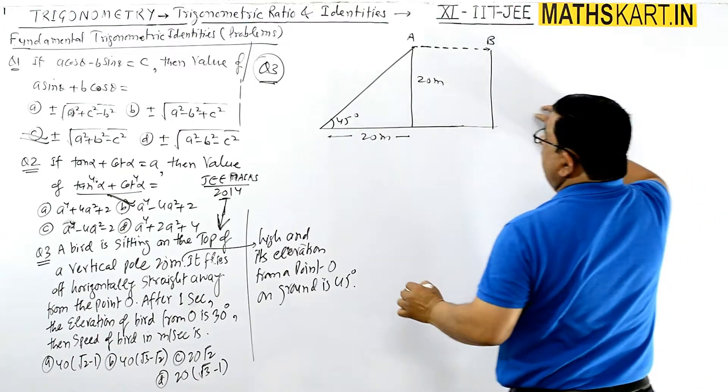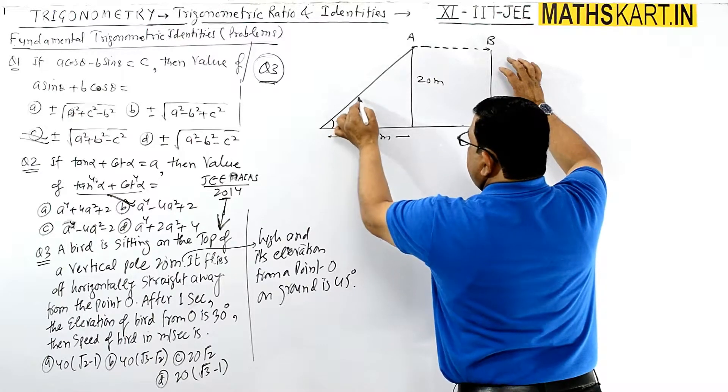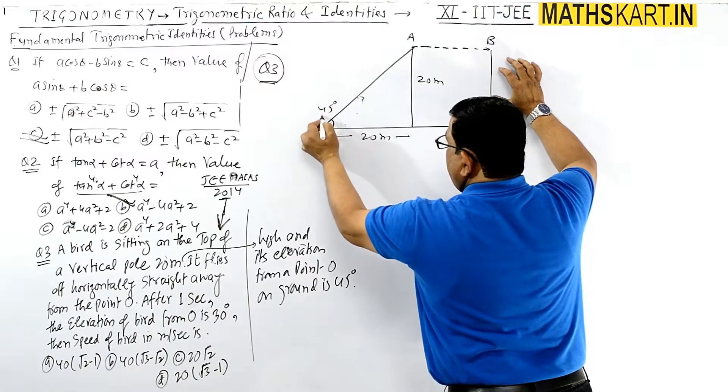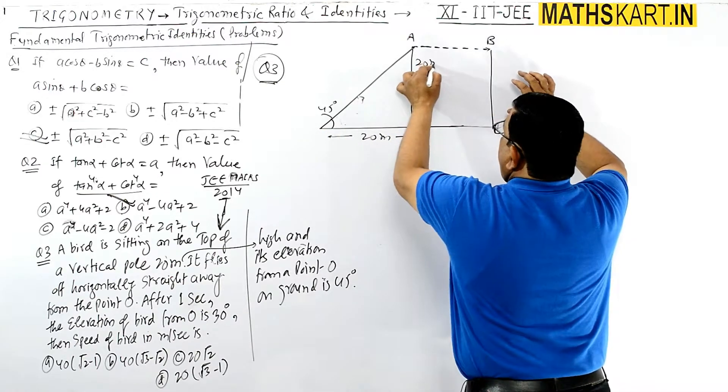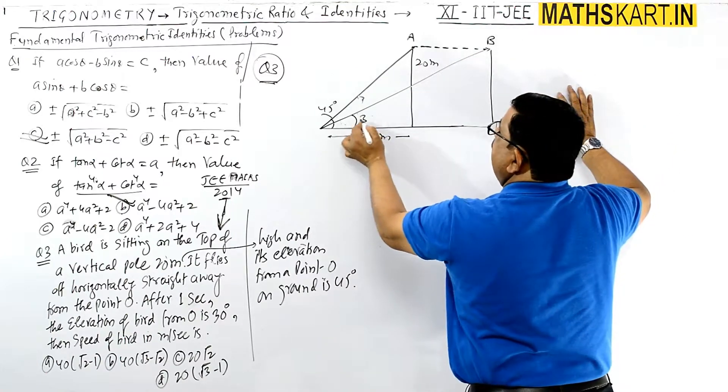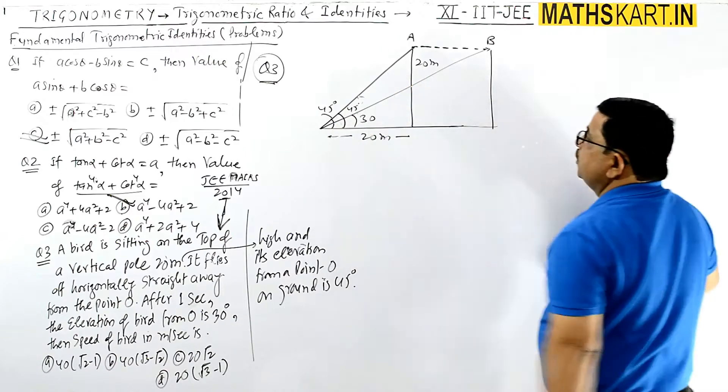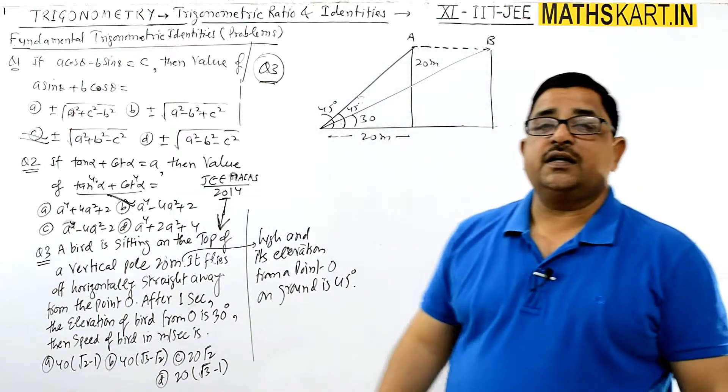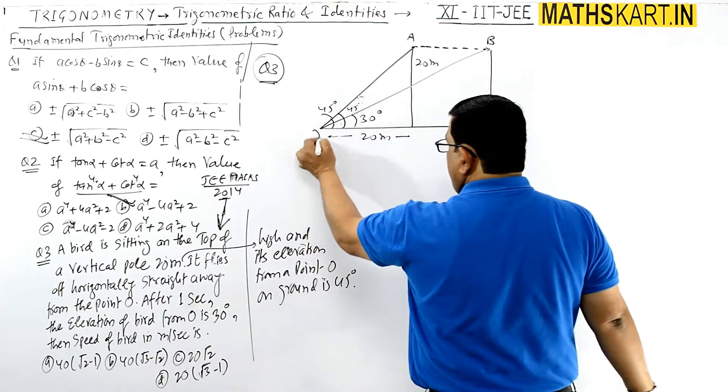Now the angle is 30 degrees. This angle is 45. Initially it is making the 45 degree angle here. And then it becomes 30 degrees. Now it is making 30 degree angle. This whole angle is 45 degrees. Now it is making 30 degree angle with the same point O.